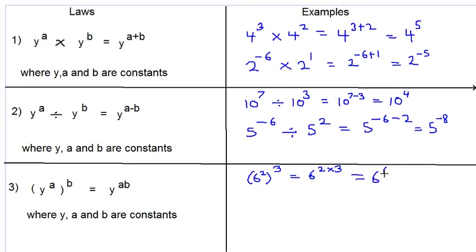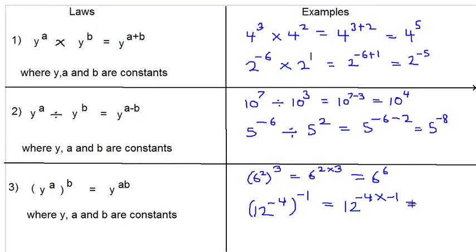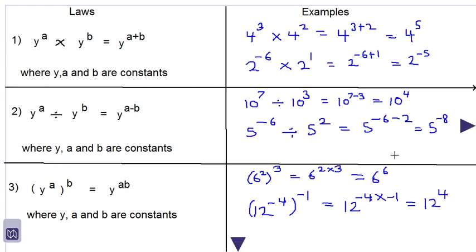That is equal to 6 to the power 6. Let's look at 12 raised to the negative 4, and this is all raised to the power negative 1. This would be equal to 12 to the negative 4 multiplied by negative 1. Negative 4 times negative 1 is positive 4, because a negative number multiplied by another negative number gives a positive number. So the answer is 12 to the power positive 4. I hope this was helpful — have a great day!